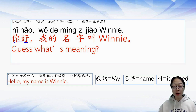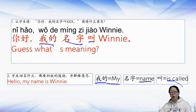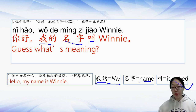你好 means hello. 叫 means 'called' or 'named.' So 我叫Winnie means 'my name is Winnie.' Let's read the full sentence together: 你好，我叫Winnie.